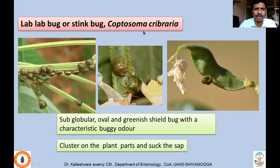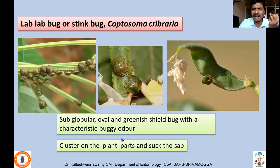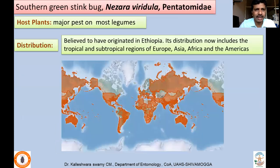Another sucking pest which infests pulses is Coptosoma cribraria, the field bean bug, attacking red gram and many other pulses. These flat bugs congregate on the plant parts and suck the juice. They are greenish colored with a characteristic buggy odor, releasing a nauseous smell when handled. They cluster and suck the sap.